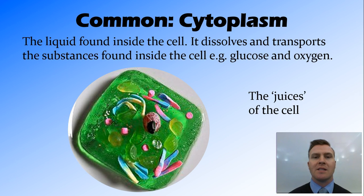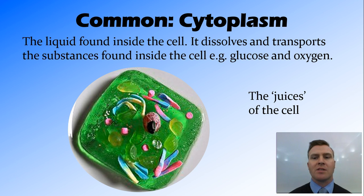Another common organelle is the cytoplasm. The cytoplasm is essentially all the water inside the cell — it's everything in the cell that isn't an organelle itself, so it's not quite an organelle, but important nonetheless. Its function is to have dissolved things in it that can be moving around the cell — it might have glucose dissolved in it, might have oxygen dissolved in it, that is then used in the cell. We could call this the juices or the jelly of the cell.